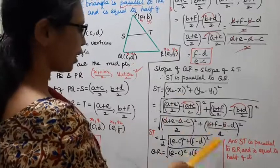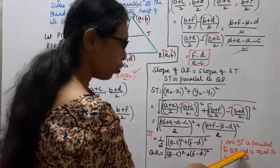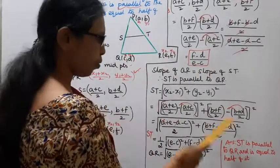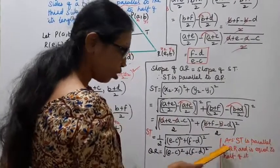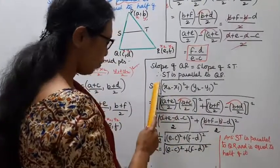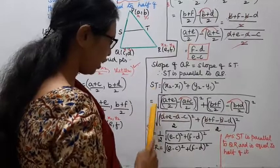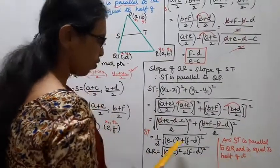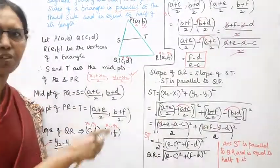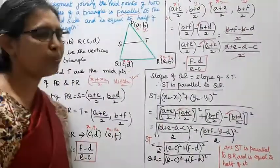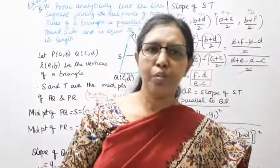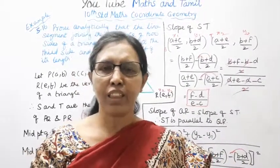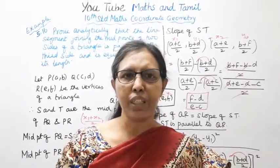Now we have proved that ST is parallel to QR, and the distance ST equals half of QR. This completes the proof. You can practice more problems on this channel. Click the bell button and subscribe.